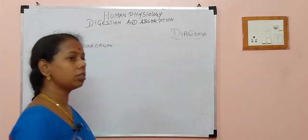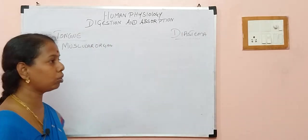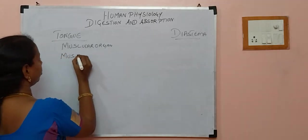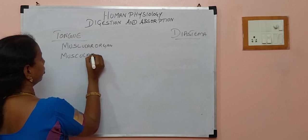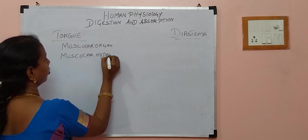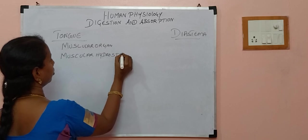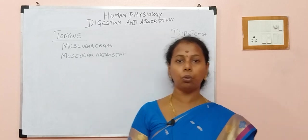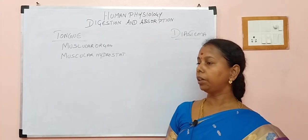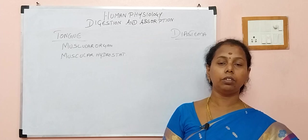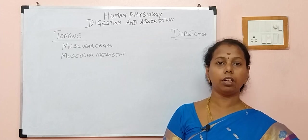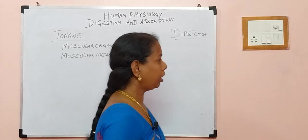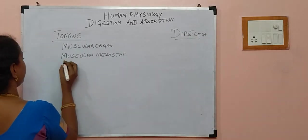This skeletal muscle, though it is not attached to the bones, is called muscular hydrostatic. So even though it is not attached to any bone in the tongue, it can still move. We can talk and masticate — all of that it performs. So it is called muscular hydrostatic, and it is found in the floor of our buccal cavity.